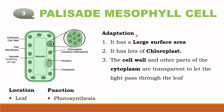Palisade mesophyll cell adaptation: this cell has a large surface area and contains lots of chloroplasts. If you look at the picture of a leaf cell, you can see that the palisade mesophyll cells are tightly packed, and the cell wall and other parts of the cytoplasm are transparent to let light pass through. This transparency allows light to reach the chloroplasts for photosynthesis, during which glucose is synthesized. This cell is found in the leaf, and its function is photosynthesis.